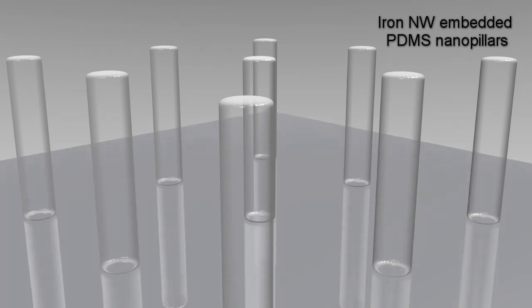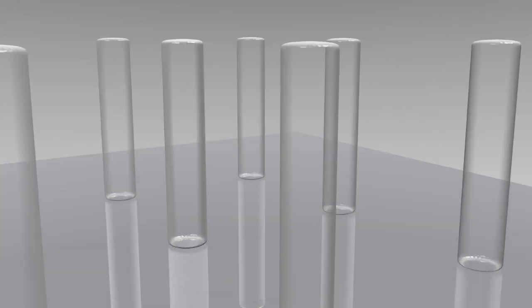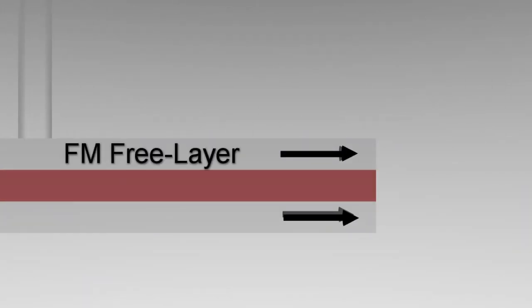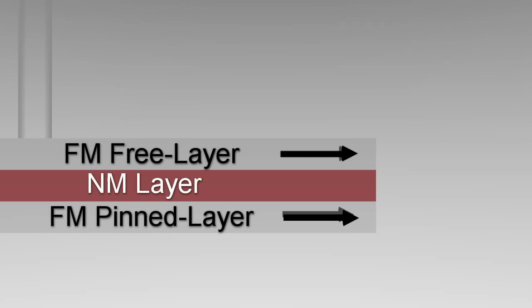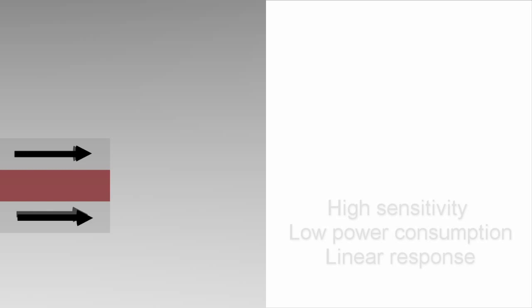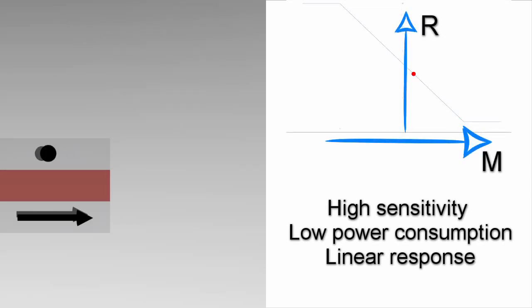These pillars are then placed over a spin valve sensor, a magneto-resistive sensor that suffers a change in resistivity when a magnetic field is applied, by varying the magnetization of a ferromagnetic layer susceptible to be magnetized by the applied field, called free layer, relative to a layer with fixed magnetization, called pin layer, intercalated by a non-magnetic layer. These magnetic sensors have high sensitivities, low power consumption, and can be made to have linear responses.